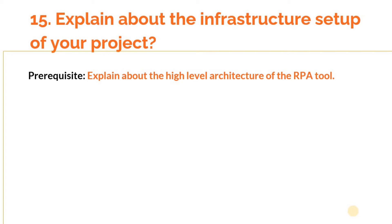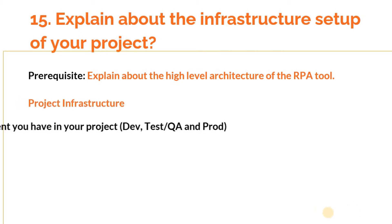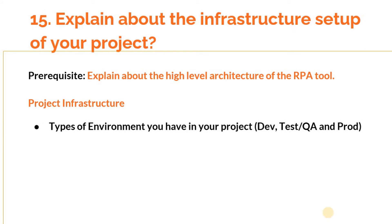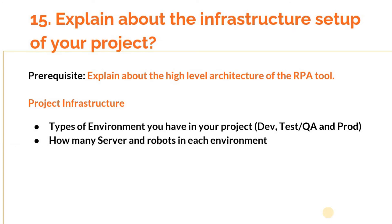After explaining the high-level architecture, please explain about the number of environments in your project — it can be development, test, and production — and also how many servers and how many robots you have. An approximate count should be fine. The interviewer is not going to cross-check you on this count, but sharing this information gives a lot of confidence to the interviewer that you know your project infrastructure very well. This is what we are trying to achieve here.